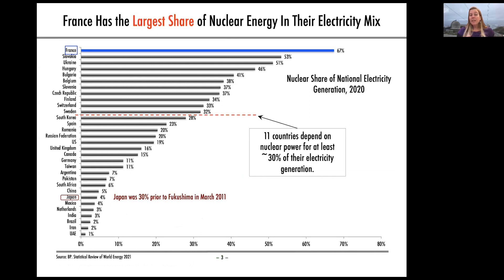But nuclear isn't the biggest portion of the U.S. electricity mix. Places like France have a larger share. And there are over 11 countries that depend on nuclear power for at least 30% of their electricity generation, so it's a big portion of their electricity mix.